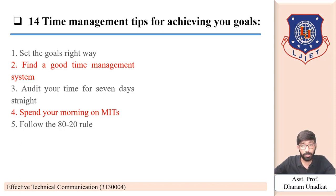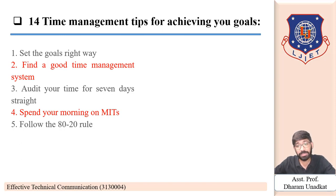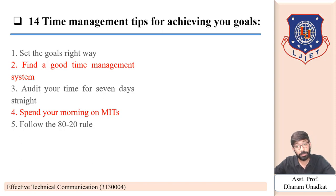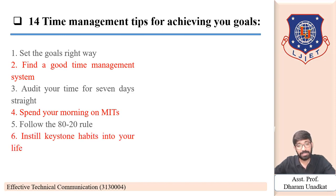The fifth tip is to follow the 80/20 rule. This rule states that 80 percent of results come from 20 percent of efforts. In sales, it also means 80 percent of sales come from 20 percent of customers. The trick is to identify the 20 percent of efforts that are producing 80 percent of results and scale that out. You can do this with various analysis techniques.